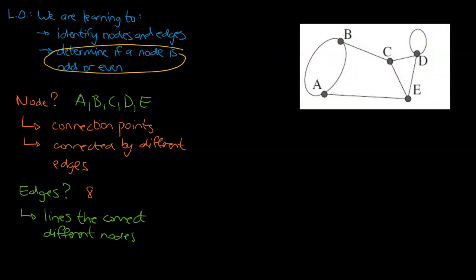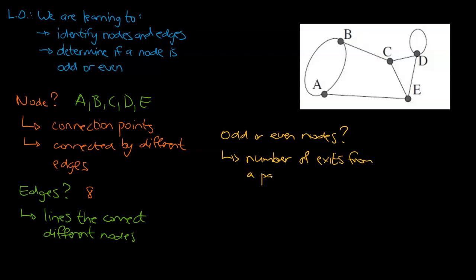Now that we know what a node and an edge is, we're going to look at determining if a node is an odd or an even node. So odd or even nodes, we'll jot this down. They depend on how many exits there are from a particular node. So it relates to the number of exits from a particular node. The number that we mentioned above will either be an odd number or an even number.